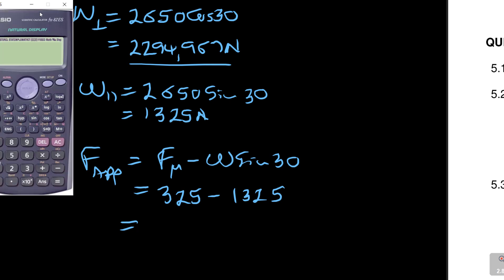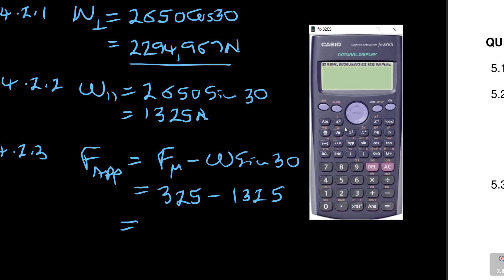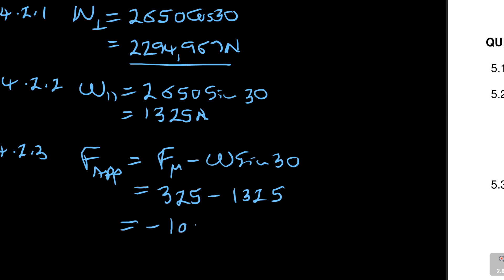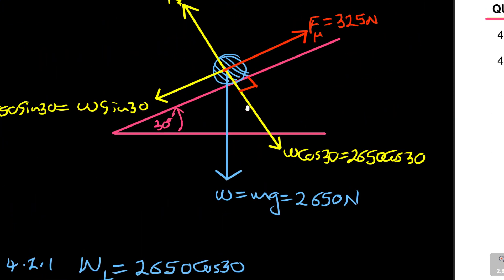This gives us negative 1,000 newtons. What this means is the block is already rolling down on its own — friction is less than the gravitational force component. The answer comes out negative, which suggests this question may have had an error, because a negative 1,000 newtons means the block is already in free roll — it will roll on its own.